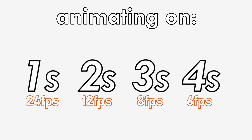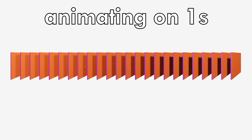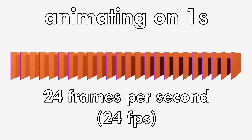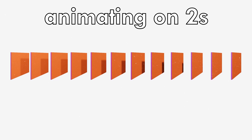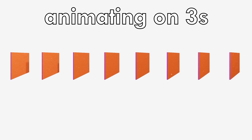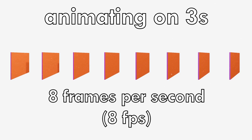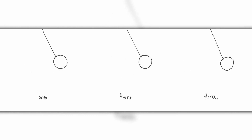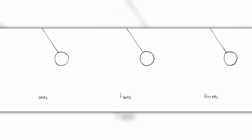Typically, animation can be done in 1s, 2s, 3s, or 4s, all of which correspond to how many frames are used per second. For the sake of this video, we'll be covering the first three. Animating on 1s means there are 24 frames for every 1 second, which is the same as 24 frames per second. Animating on 2s creates 12 frames for every 1 second, meaning each frame is held for twice as long. Finally, animating on 3s creates only 8 frames per second, meaning each frame is held for 3 times as long. From this diagram, you can really notice the difference between animating on 1s, 2s, and 3s.